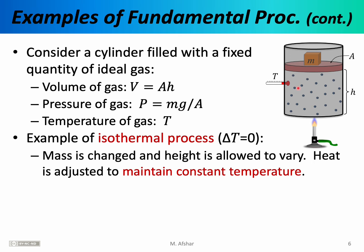As you compress the gas, you might notice that the temperature gradually begins to rise, so very quickly you turn down the Bunsen burner. By turning down the flame, you're effectively cooling the gas down and making sure that the temperature remains constant. So while the height is changing — which means the volume is changing — and while the mass is changing — which means the pressure is changing — the temperature is not changing, because you're carefully managing the heat source, and therefore you have achieved an isothermal process.